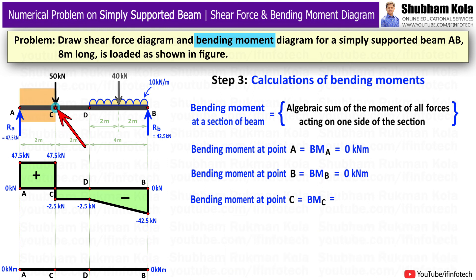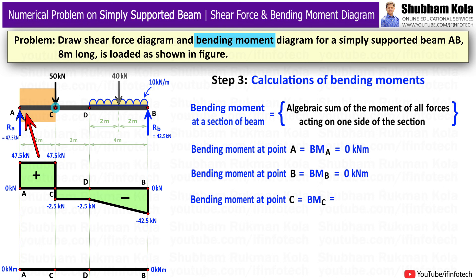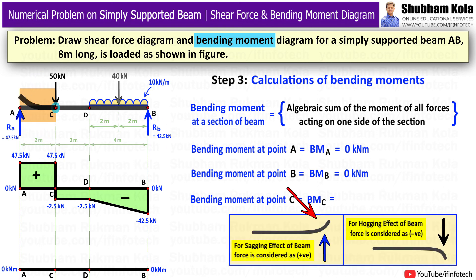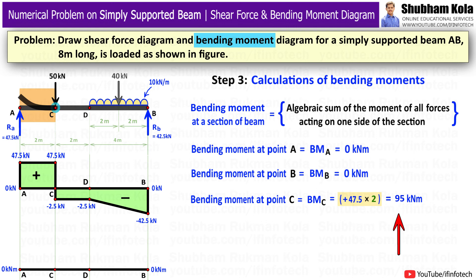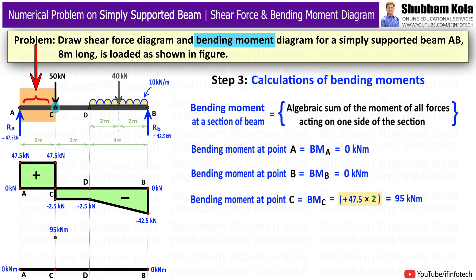To calculate bending moment at point C: on the left-hand side of C, reaction force Ra of 47.5 kN acts upward, causing sagging — so it is positive. Moment equals force multiplied by distance: 47.5 kN multiplied by 2m equals 95 kNm. Since it is positive, I mark this point above the reference line at 95 kNm. There is no load between A and C, so I connect these two points with an inclined line.